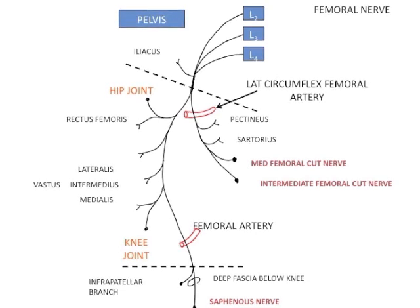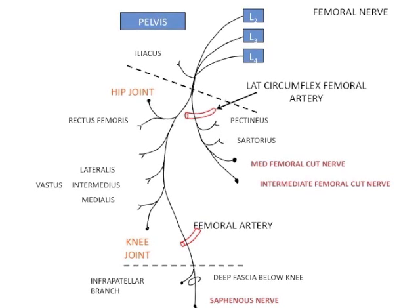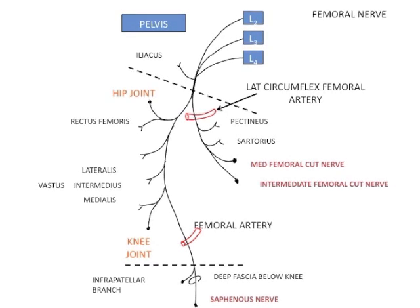The posterior branch is a deep branch. It supplies the hip joint and the knee joint and gives muscular branches to rectus femoris, vastus lateralis, intermedius, and medialis. It then continues as the saphenous nerve below the knee joint.